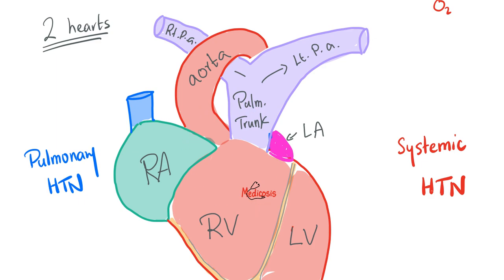In anatomy, you have one heart. But physiologically speaking, if you really want to understand it, imagine that you have two hearts — a left heart and a right heart. Today's video discusses the cardiac cycle. We'll focus more on the left heart because it matters more, since the aorta supplies the heart and the brain. Left ventricle is way more important than the right ventricle. That's why a left bundle branch block is more concerning to a doctor than a right bundle branch block.